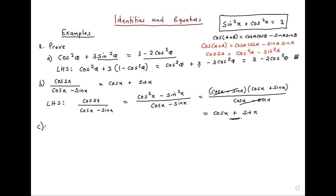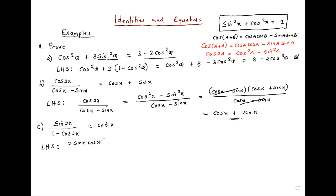We can have another one. Sine 2x over 1 minus cos 2x is the same as cot x. Left hand side: sine 2x — sine 2x is the same as 2 sine x cos x. You can derive it using this formula in terms of sine, over 1 minus cos 2x.